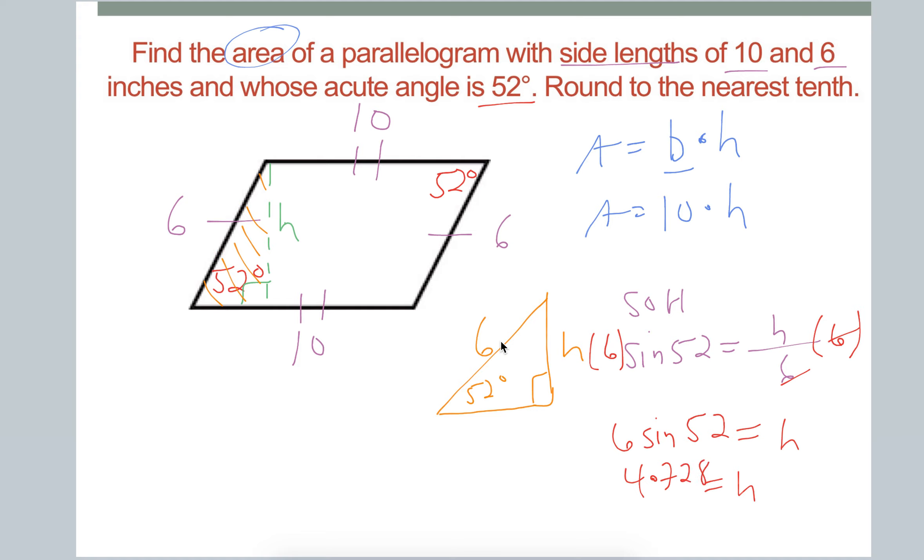While it does stay around to the 10th, remember we want to keep as many decimal places as we can until the very end. So now, final step is to plug this in your area formula. So base, we established to be 10 height. Now that we've found the thing perpendicular to that base, we can now use that as our height. And then round to the 10th. So we get 47.28. So I'm going to call it 47.3.